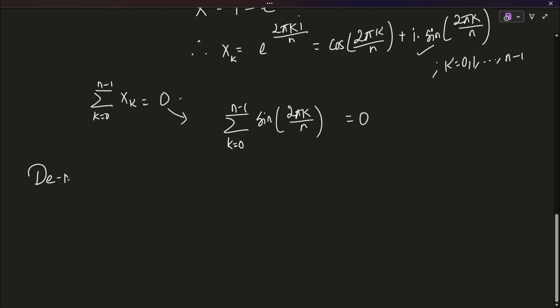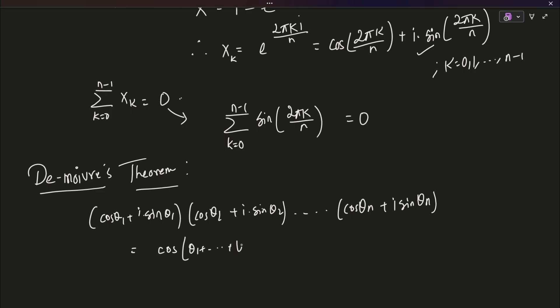And, one last thing is De Moivre's theorem. In De Moivre's theorem, what will happen is you simply have a bunch of expressions cos theta 1 plus i into sin of theta 1 cos theta 2 plus i into sin of theta 2 and all the way up to cos of theta n, let's say. There are n such expressions where theta 1 to theta n are n angles.